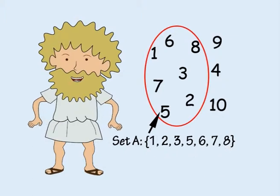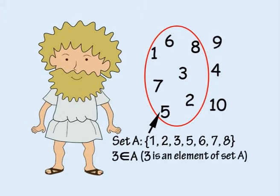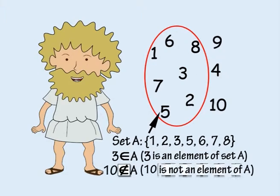Let's call this set, set A. Then this symbol means that 3 is an element of A. And this symbol means that 10 is not an element of A.